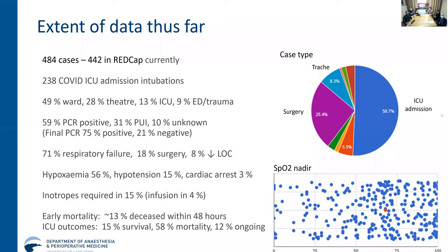The setting is about half in ward and about a third in the operating theater, looking at all cases. Our initial COVID status: we're now seeing a larger proportion that are PCR positive — about a third PCR positive and a third PUIs, with that last tenth being unknown. Looking at our final status, about three quarters of the patients we've intubated have turned out to be PCR positive. The indication is predominantly respiratory failure, and in terms of patient case management, we see an incredible incidence of hypoxemia — saturations of less than 90% around intubation.